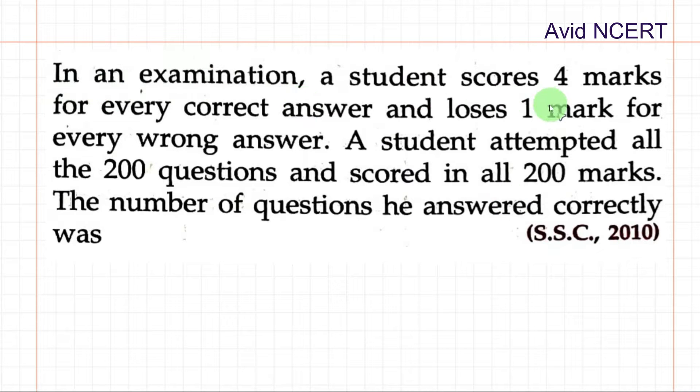In an examination, a student scores 4 marks for every correct answer and loses 1 mark for every wrong answer. A student attempted all the 200 questions and scored in all 200 marks. The number of questions he answered correctly was?